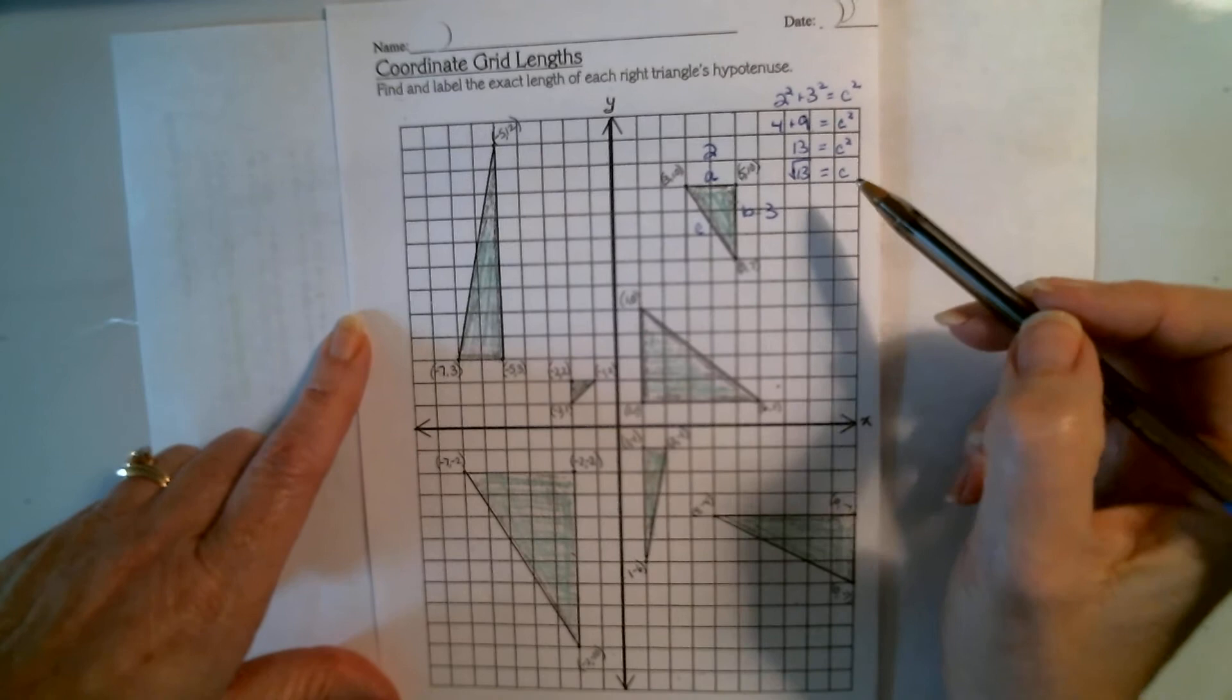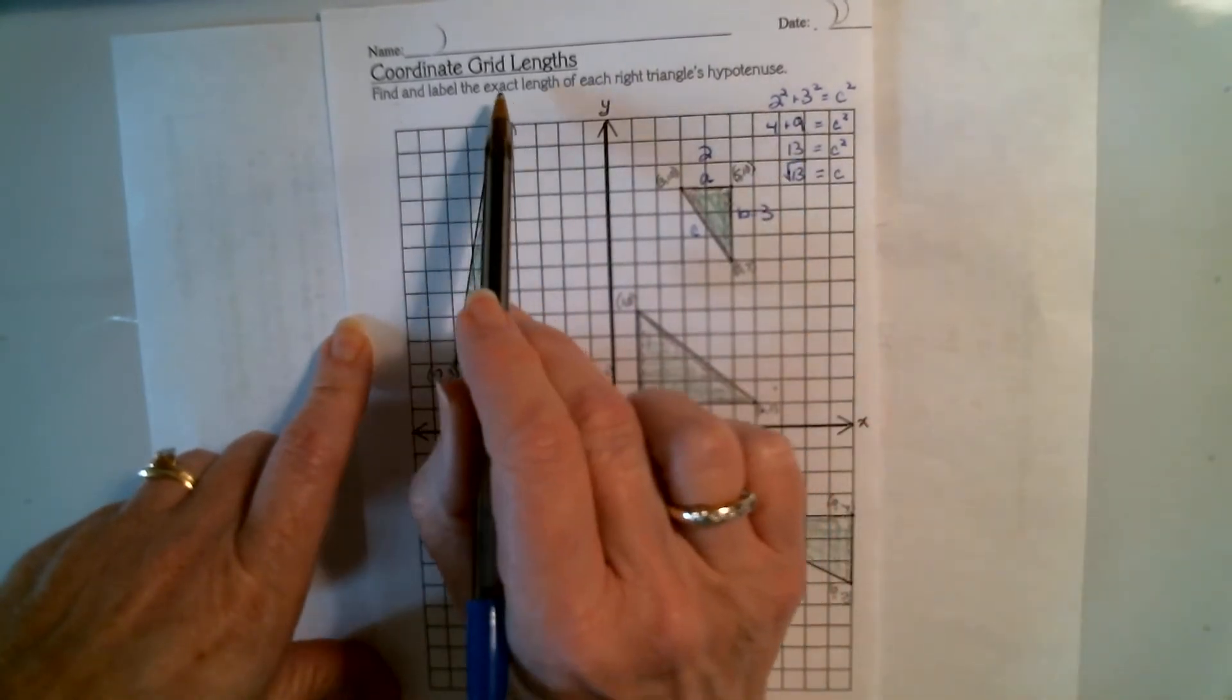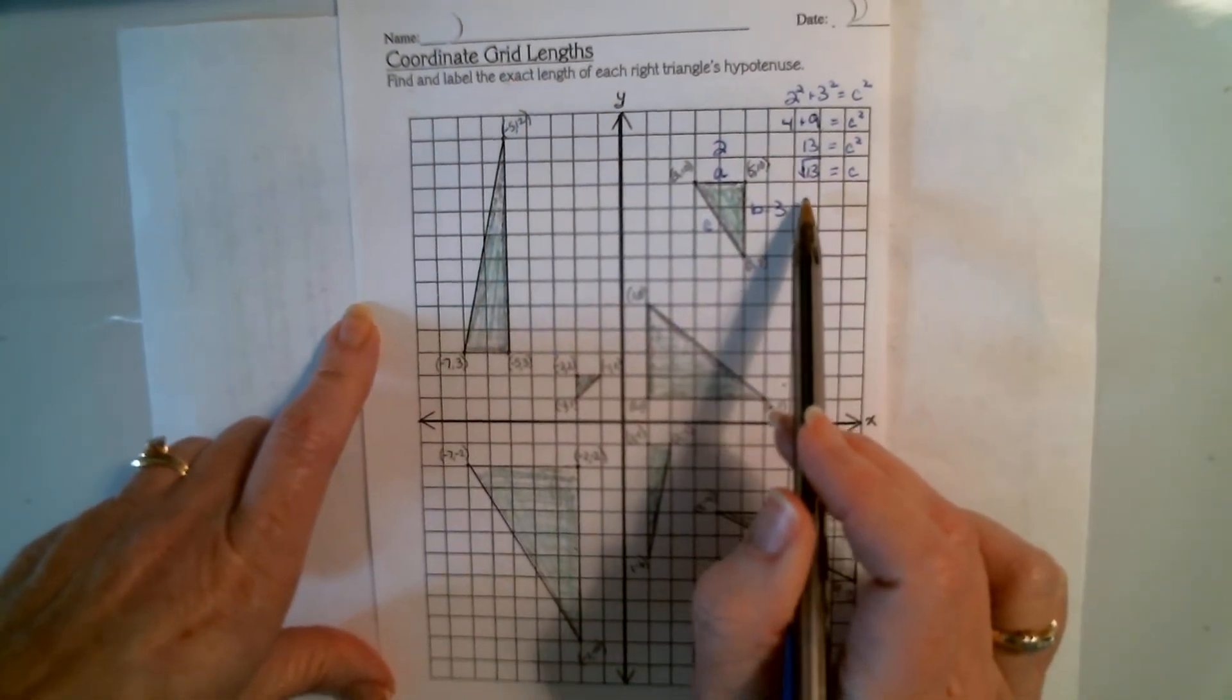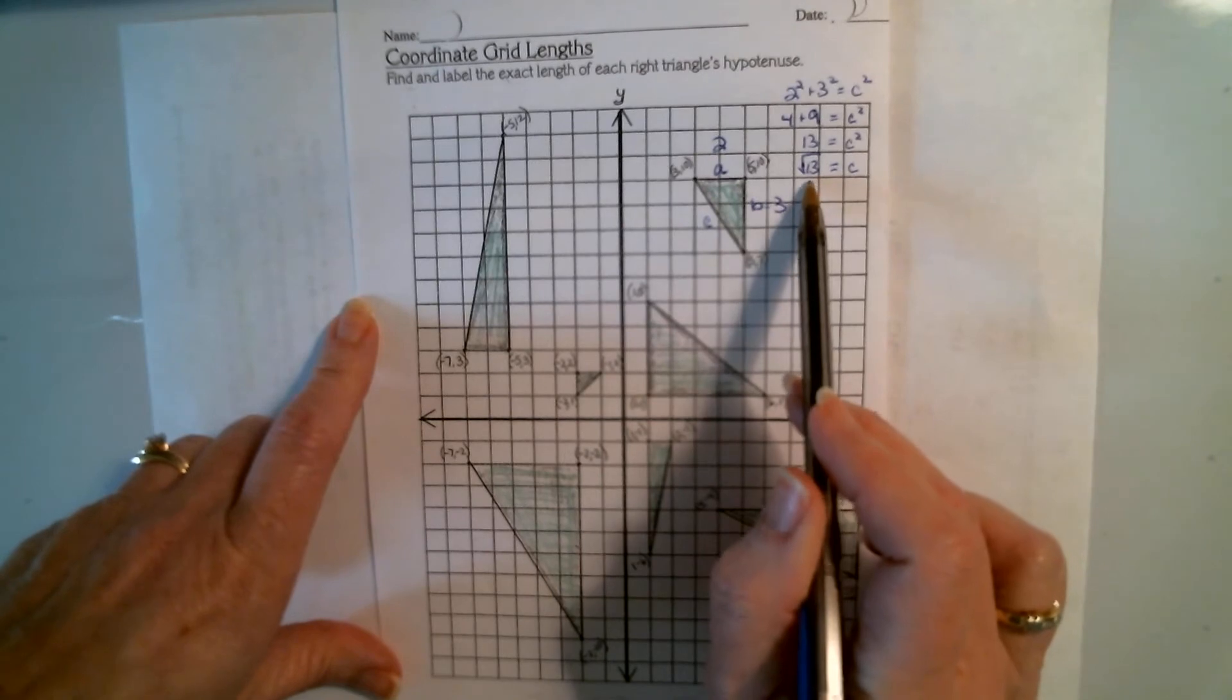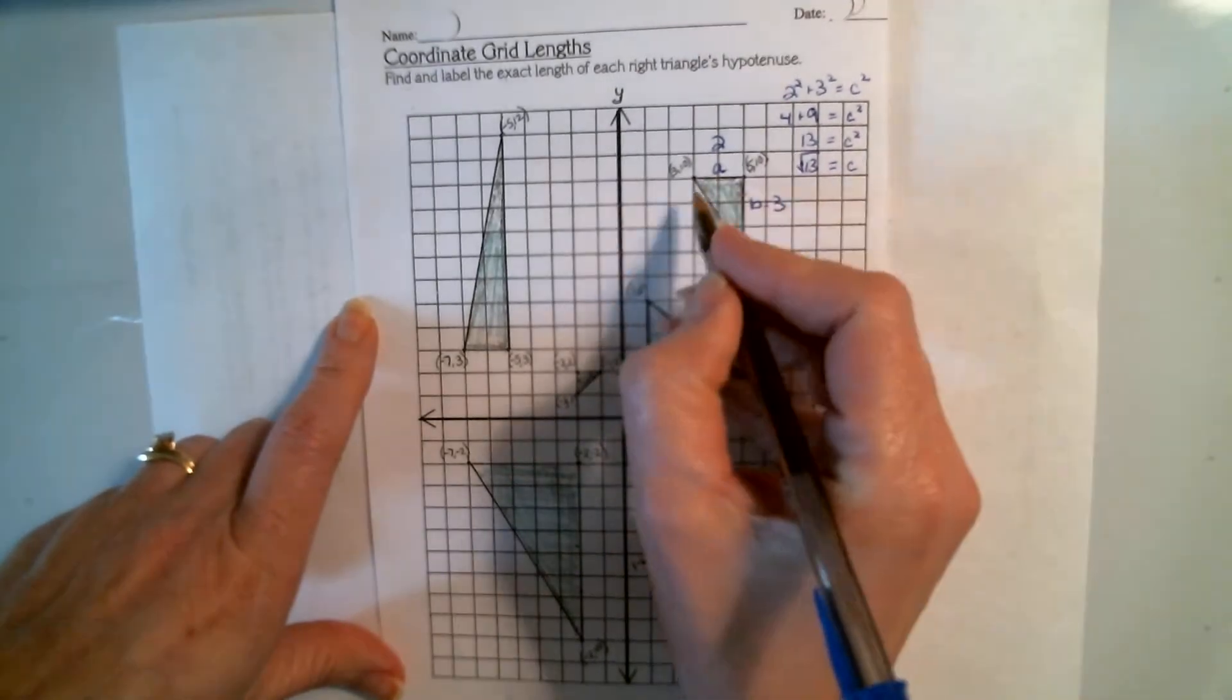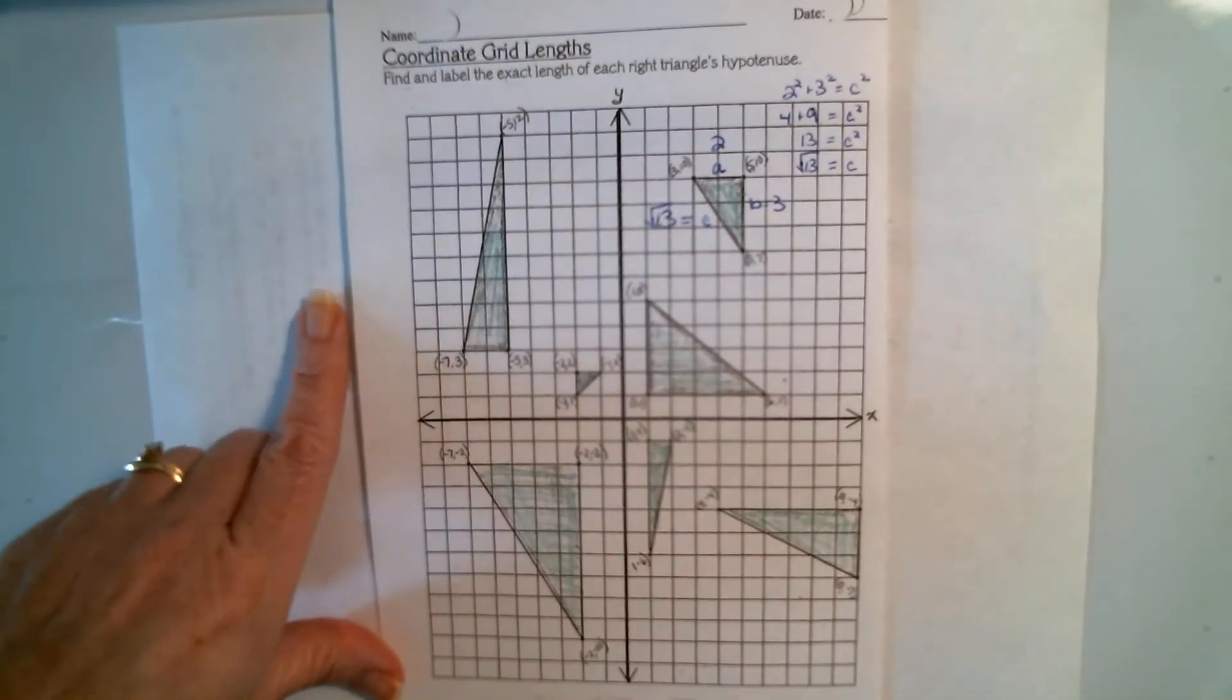But if I want to approximate it, we spent time doing that, but if I want to leave it exact, then I'm going to just leave it as the square root of 13. That can be used as a display of measurement. So c is the square root of 13 long.